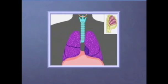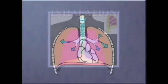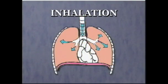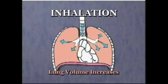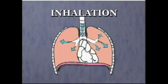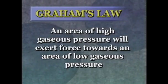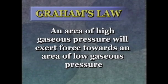The body exchanges gases with the atmosphere by inhaling and exhaling. During inhalation, the muscular action of the diaphragm along with the intercostal muscles causes lung volume to increase, with a corresponding drop in lung pressure. This allows air to enter the lungs under its own pressure according to Graham's Law, which states that an area of high gaseous pressure will exert force towards an area of low gaseous pressure.